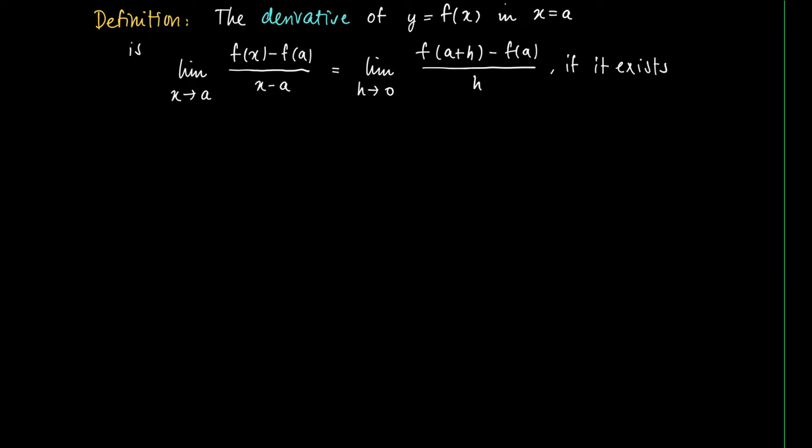If it exists, we use the following notation: f prime of a. This is the derivative of a function at the value x equals a.